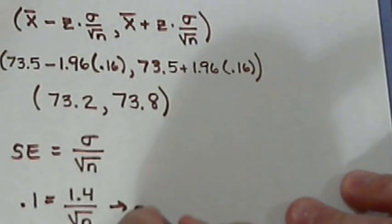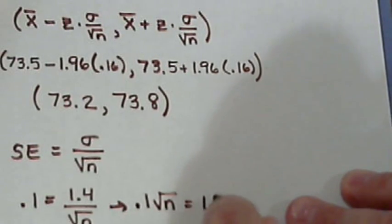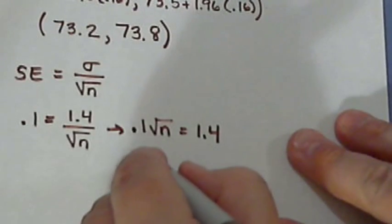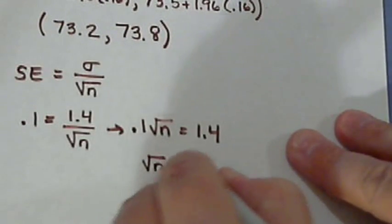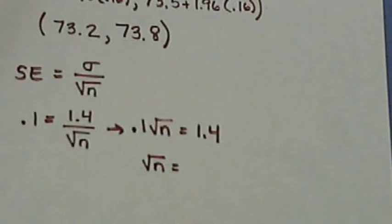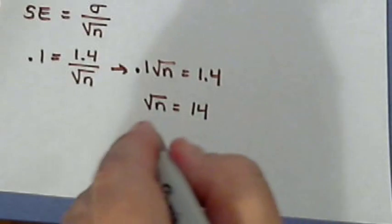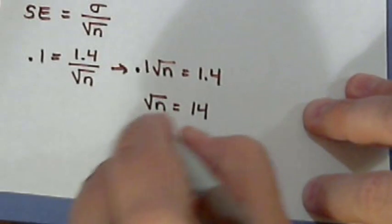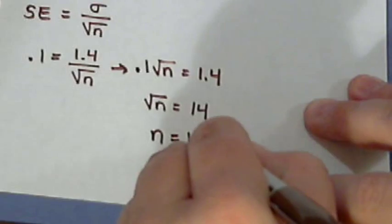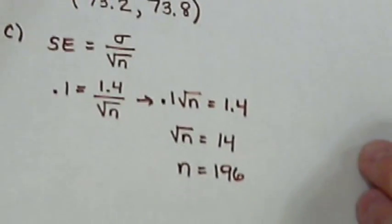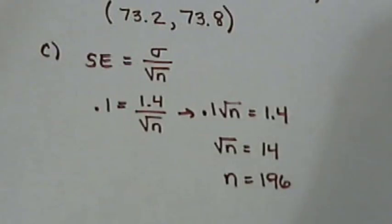So we multiply both sides by the square root of n, divide by 0.1, and square both sides. And so what we get is a number of 196. So if he wants to play and get it to where his margin of error, his standard error is just 0.1, then he would need a sample of almost 200 rounds of golf.